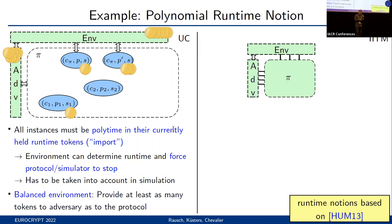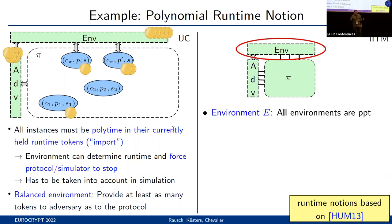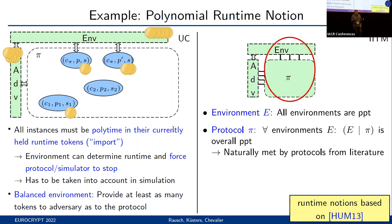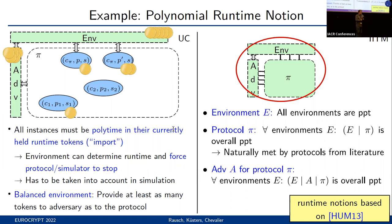The IITM model takes a more abstract approach based on results by Hofheinz et al. Basically, it says environments are required to be PPT, and protocols must be such that if combined with some arbitrary environment, the combined system runs in overall polynomial time. This abstract notion is rather naturally met by protocols from the literature — for example, if you can show your protocol runs in polynomial time in all of its inputs or the length of all its inputs. This is then extended in essentially the same way to adversaries: if we add an adversary to the system, then this must still, for arbitrary environments, run in overall polynomial time.